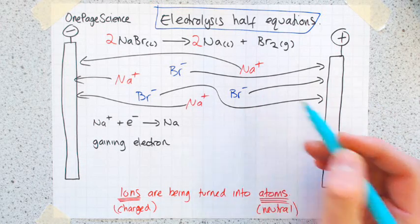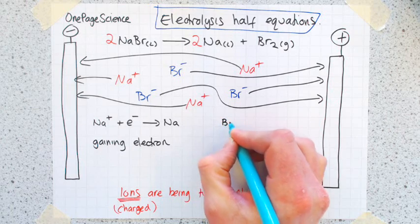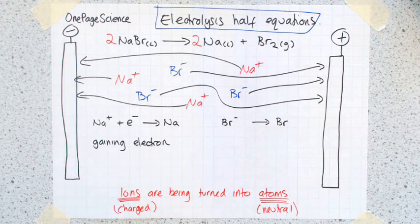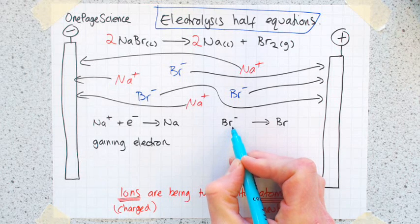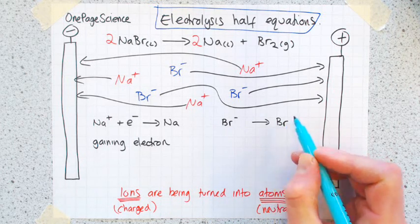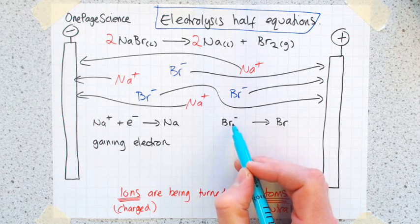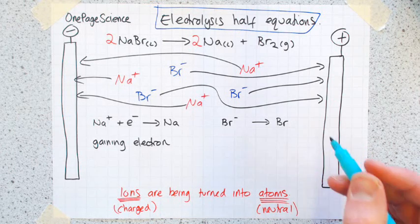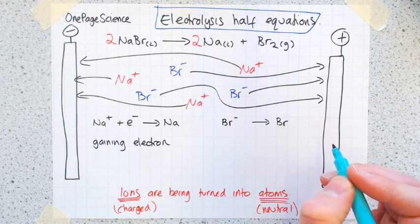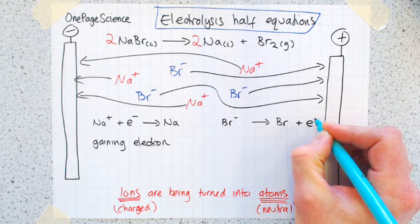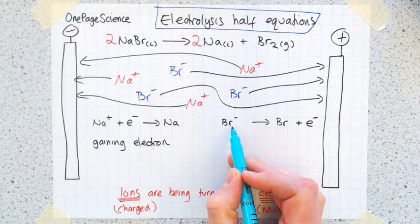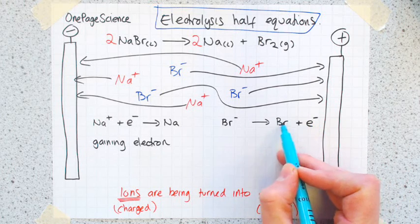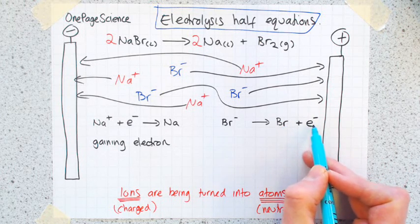At the positive electrode, where the bromides are going, we have Br-, and it's turning into a Br atom. So a negatively charged bromine ion is turning into a neutral bromine atom. The way it does that is it gives away an electron, it loses an electron. I'm going to show you the way I prefer - it helps you out more if you move on to A-levels, and it shows that electrons are not disappearing. You write this: Br- turns into Br plus e-. So a bromine ion is turning into a bromine atom by giving away this electron. We've got a neutral atom and this free spare electron.